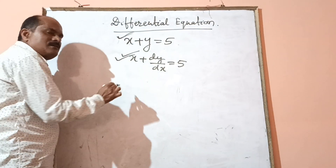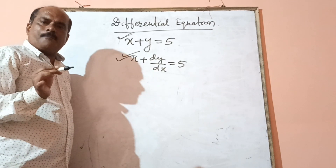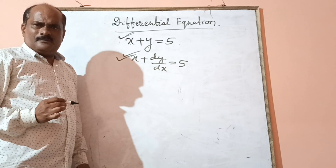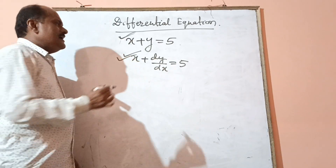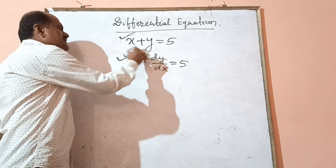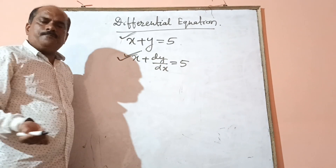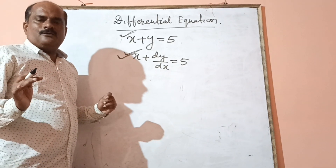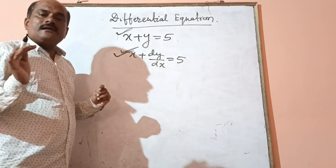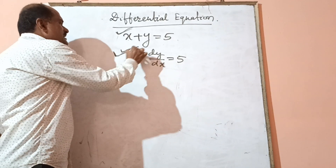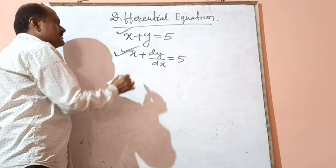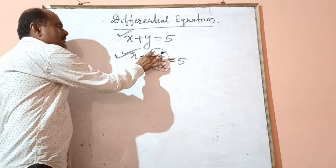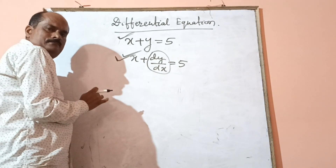If the equation contains derivative with respect to more than one variable and contains partial derivatives, then that is known as a partial differential equation. We will discuss about ordinary differential equations, where the equation contains derivative with respect to only one variable.